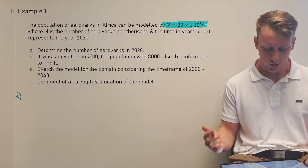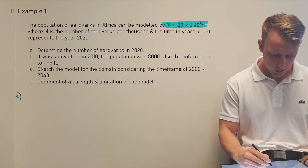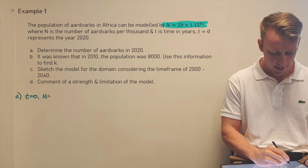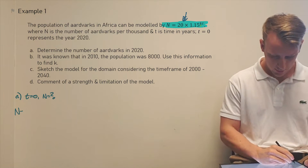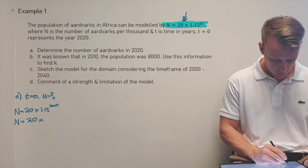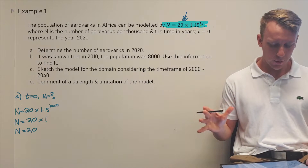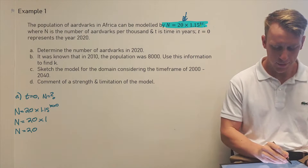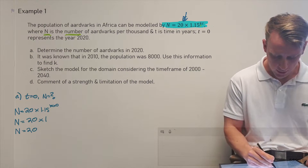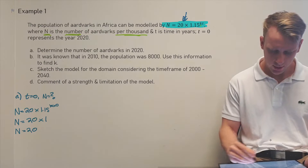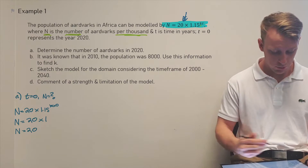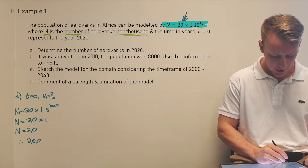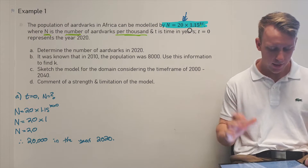Part one: determine the number of aardvarks in 2020, which is when t equals zero. Substituting in, n equals 20. But since n represents the number of aardvarks per thousand, that means the actual population is 20,000.